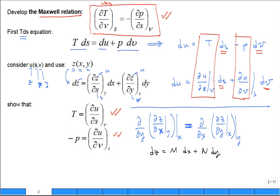This right here is M, and this is N. So you can see what they are. What they say is the partial of M with respect to Y holding X constant equals the partial of N with respect to X holding Y constant.